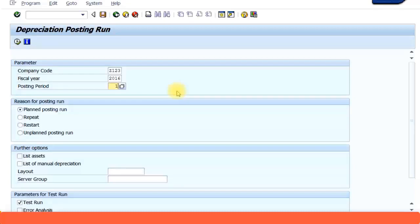It's always planned posting run. You can always repeat that run if you want, but ensure that the posting periods are not closed. If it's not closed, you can always do a repeat. Other than that, you don't have to do any of the settings here. For test run, you can actually list the assets to see how the...